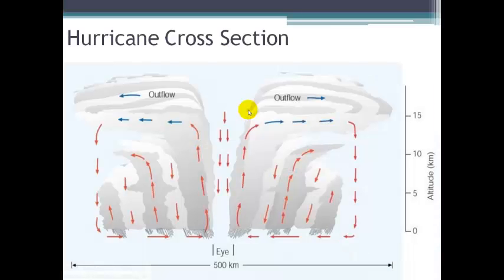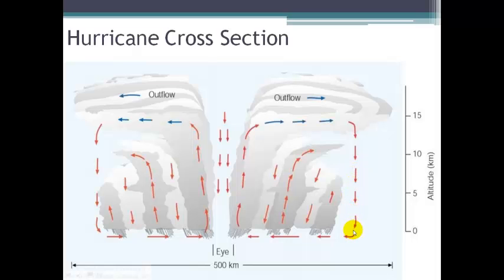Here's a cross-section of a hurricane. The eye is at the center with the lowest pressure. On the sides of the eye is the eye wall, where the most massive convective uplifting occurs. There's a complex circulation pattern with most of the uplift at the eye wall, then outflow, subsidence on the outer edge, and convergence completing the circulation due to the low pressure system. The storm tops out at the troposphere, extending in this case to about 500 kilometers.